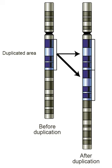Gene duplications can also be identified through the use of next generation sequencing platforms. The simplest means to identify duplications in genomic resequencing data is through the use of paired-end sequencing reads. Tandem duplications are indicated by sequencing read pairs which map in abnormal orientations. Through a combination of increased sequence coverage and abnormal mapping orientation, it is possible to identify duplications in genomic sequencing data.